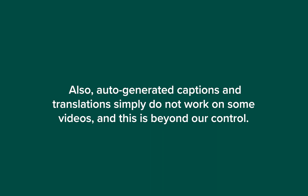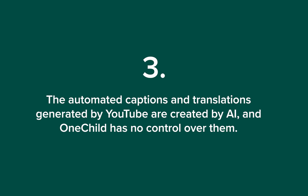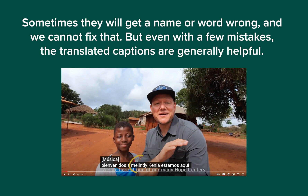Also, auto-generated captions and translations simply do not work on some videos, and this is beyond our control. Three: the automated captions and translations generated by YouTube are created by AI, and one child has no control over them. Sometimes they will get a name or word wrong, and we cannot fix that.